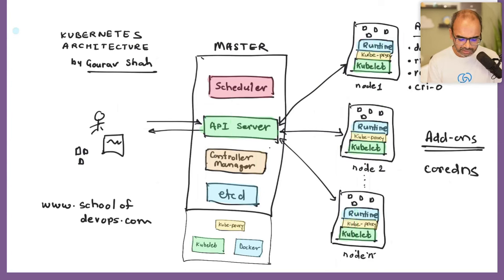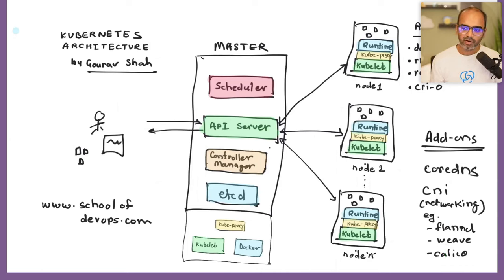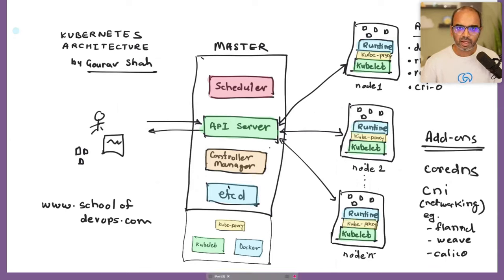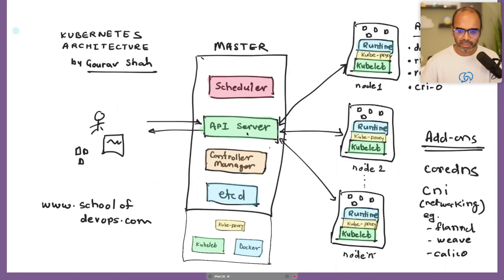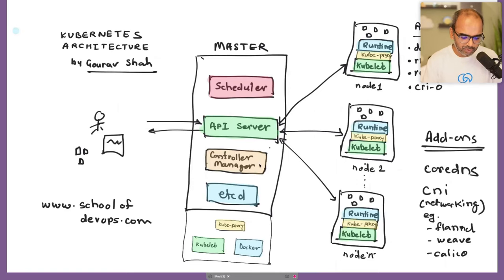There are also additional components: for service discovery based on DNS we have CoreDNS, and for networking we have CNI plugins — Flannel, Weave, Calico, and so on. Those are the core components of Kubernetes you should be aware of when getting started. At minimum, you should be able to name: API server, scheduler, controller manager, etcd, kubelet, kube-proxy, and the container runtime.